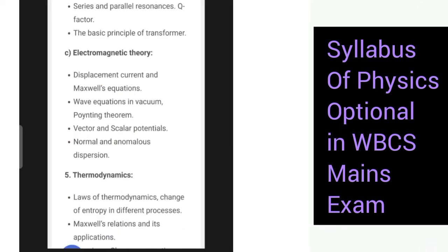Next we have series and parallel resonances, Q factor. Next is the basic principle of transformer. The next section is based on electromagnetic theory: displacement current and Maxwell's equations. Then we have wave equations in vacuum, Poynting theorem, vector and scalar potentials, normal and anomalous dispersion.